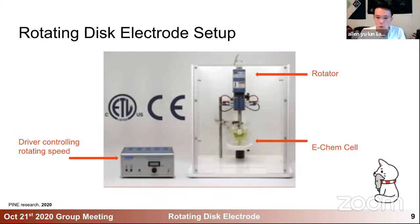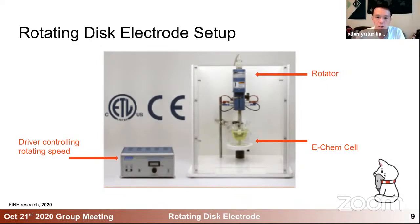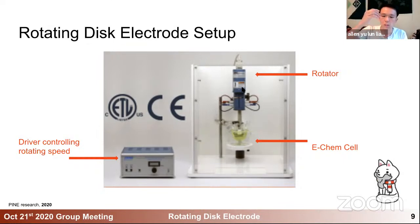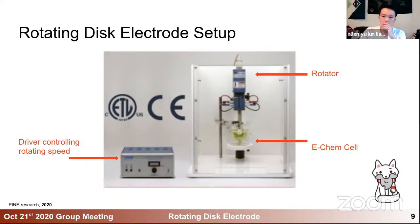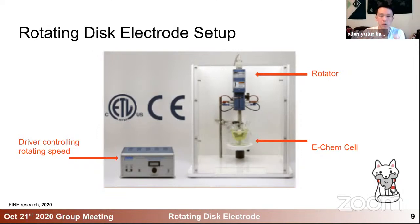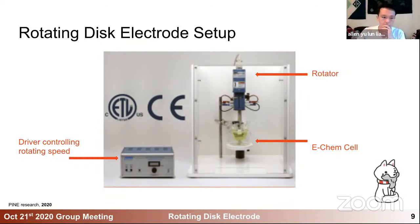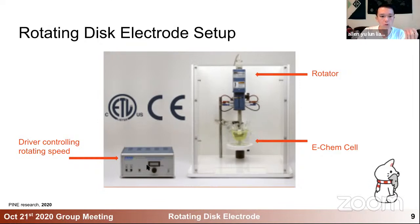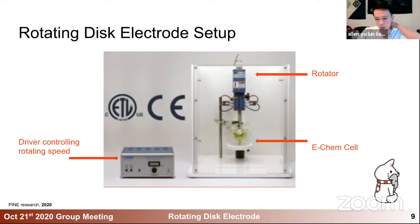This is the setup. We have a really similar setup within the group — right in 177 we have two of these. You can see the blue thing on the right is a rotator motor that will basically control the electrode spinning under it. On the bottom of it, you attach your electrochemical cell — whether it's just a large container or something specially designed for your need — that will contain your active species. You attach this rotating motor to a driver to control the rotating speed, which will precisely control how fast you are rotating your electrode.